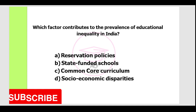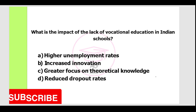Next question. Which factor contributes to the prevalence of educational inequality in India? Option A: reservation policies. Option B: state-funded schools. Option C: common core curriculum. Option D: socio-economic disparities. The correct answer is Option D, socio-economic disparities.